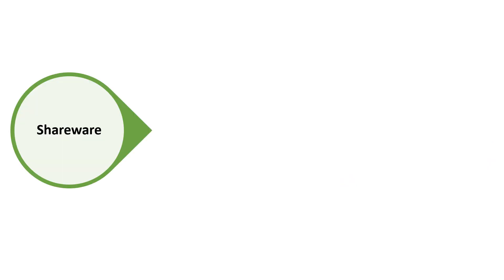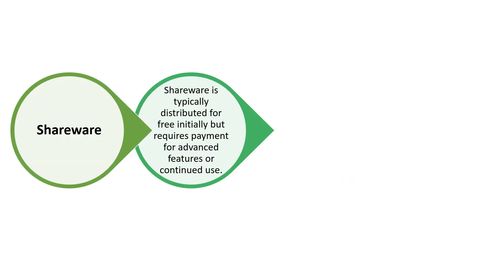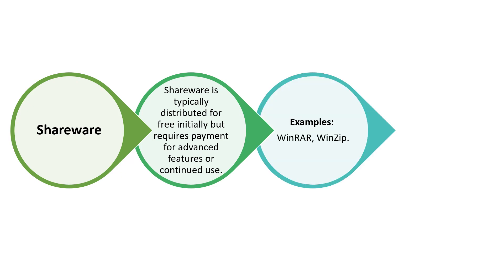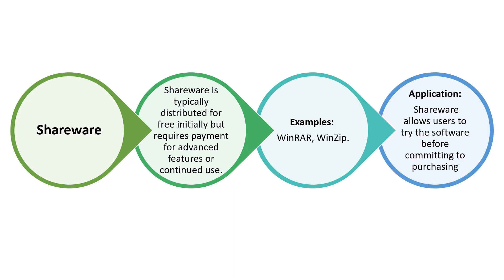The last type is shareware. This is typically distributed for free initially but requires payment for advanced features or continued use. Examples are WinZip and WinRAR. Shareware allows users to try the software before committing to a purchase.